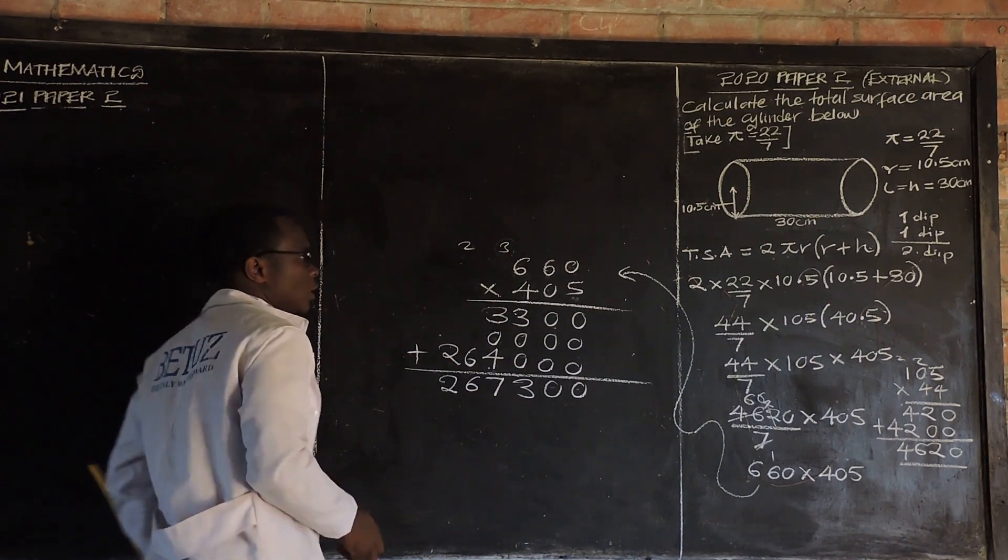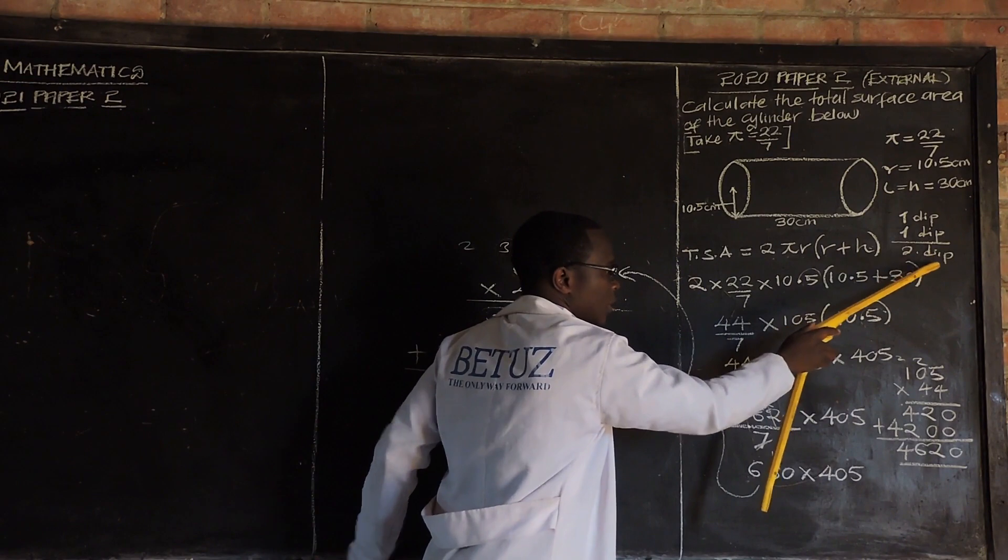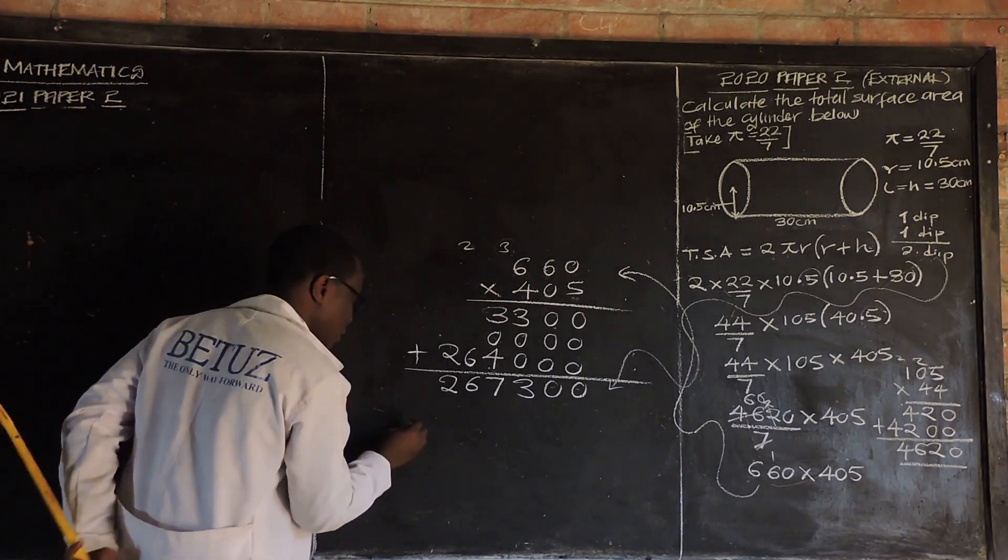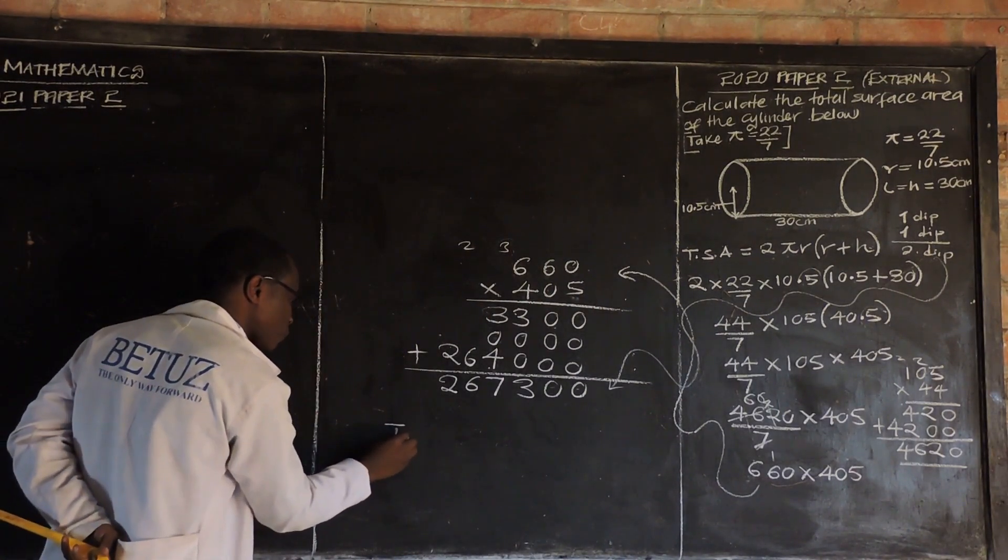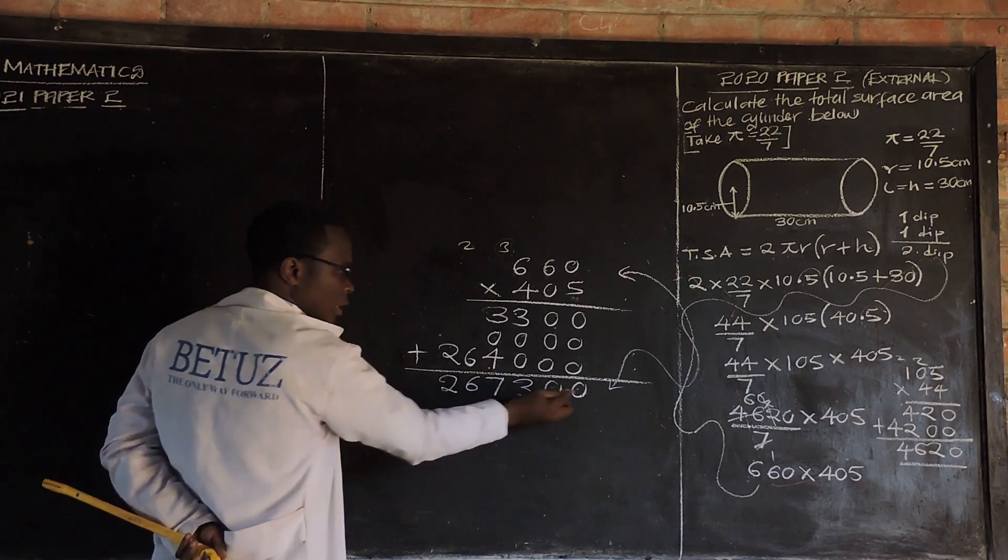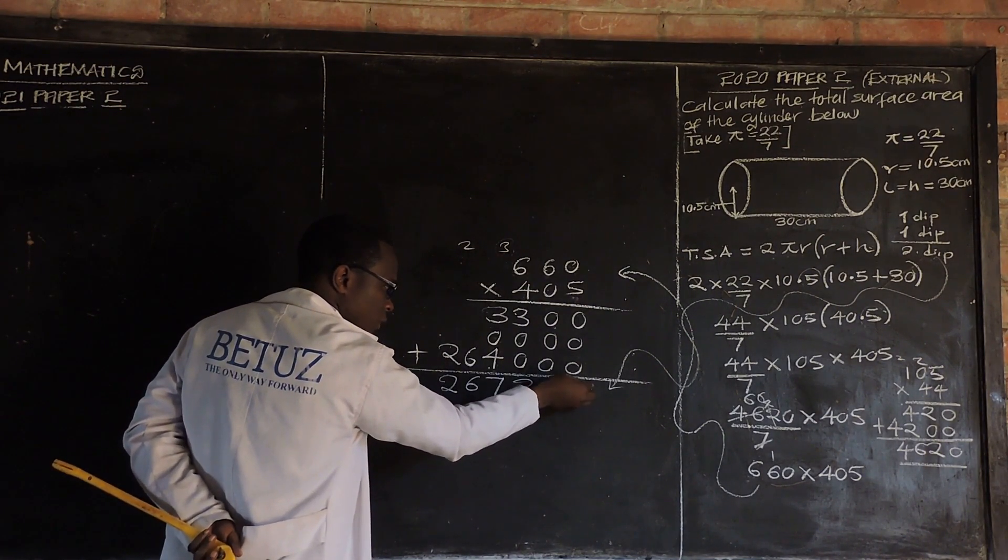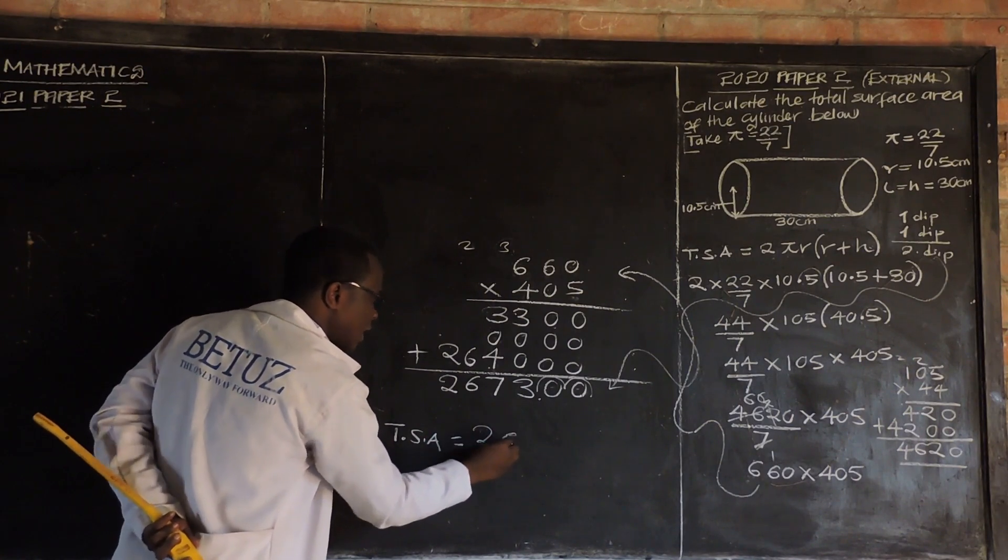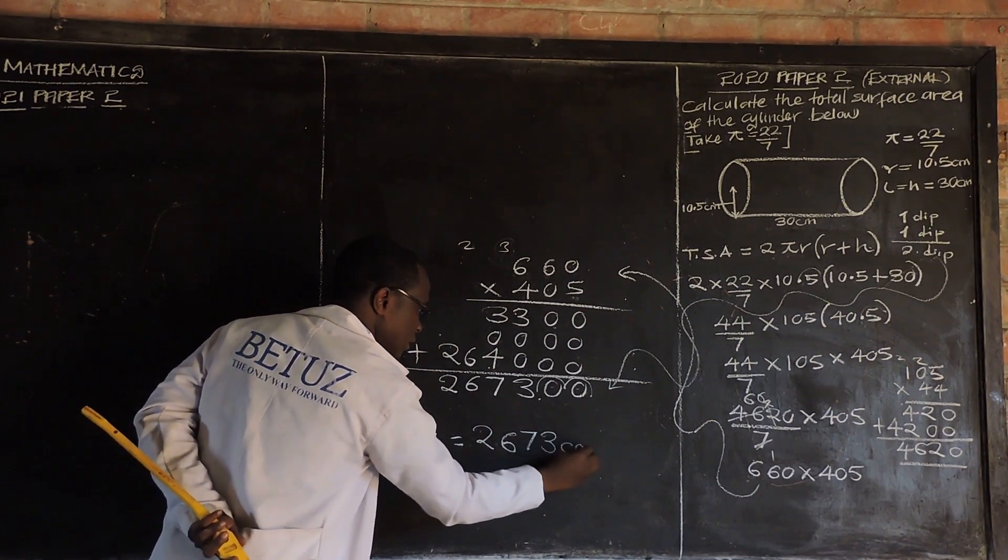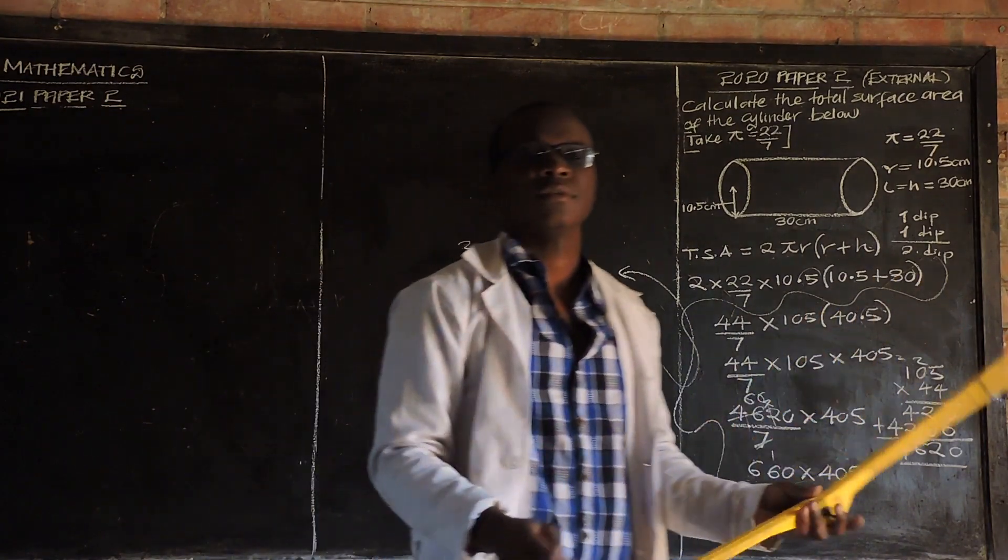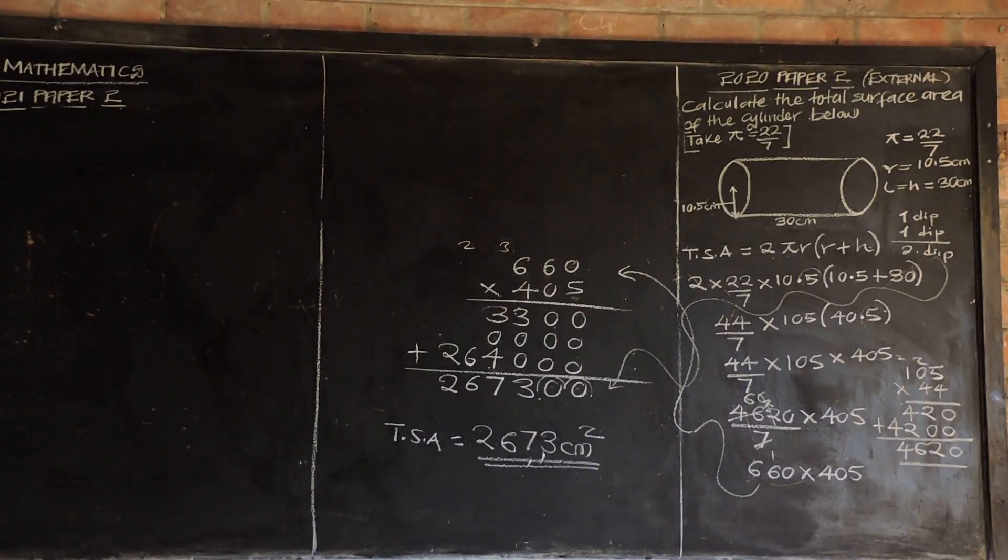Now, take note. We ignored how many decimal places? We ignored two decimal places. So, we need to take it back for our final answer. Taking back our two decimal places, the decimal point is just behind. Taking it back, our answer is 2,673.00 centimeters squared. This is our total surface area.